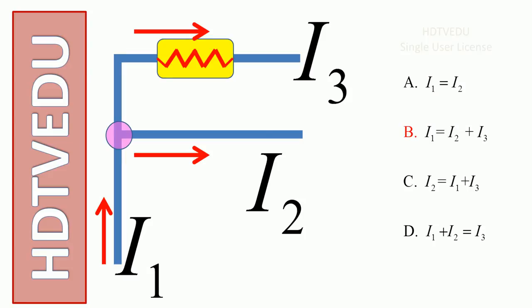So here we have current entering the point. Current entering is I1.